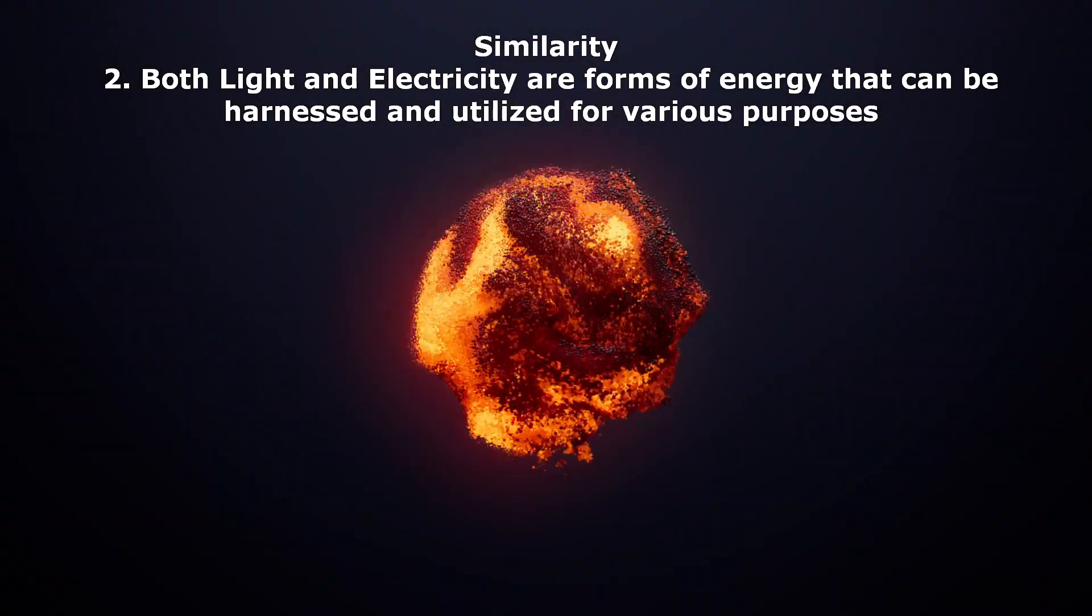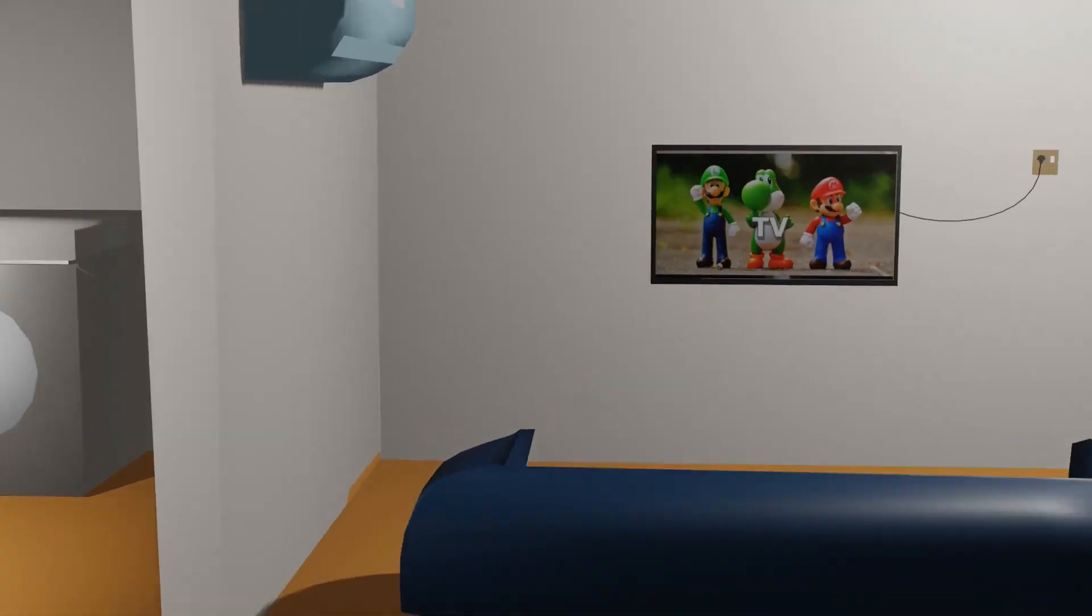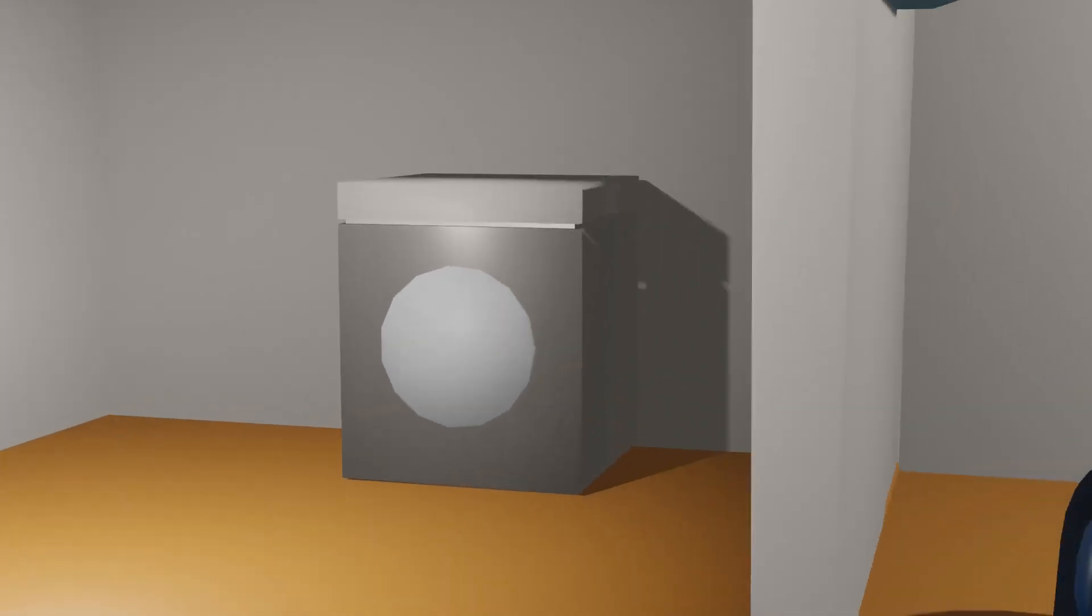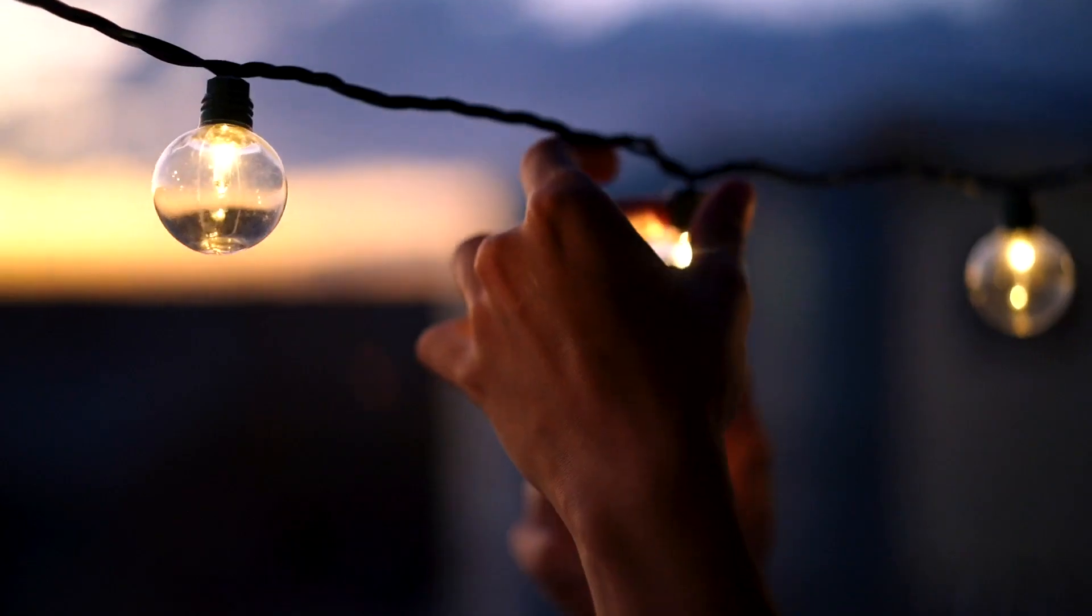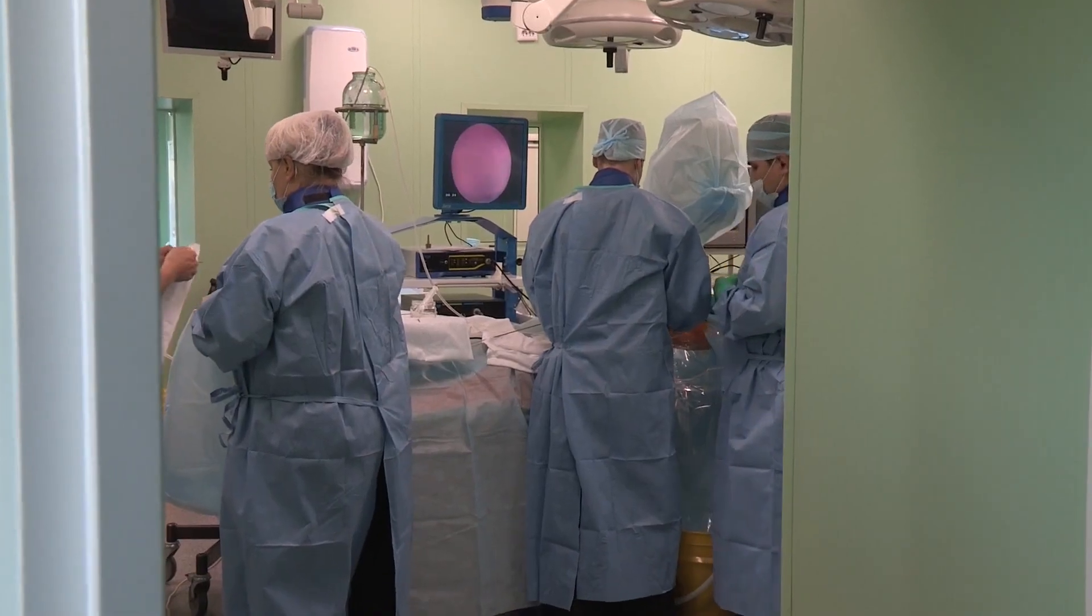Secondly, both light and electricity are forms of energy that can be harnessed and utilized for various purposes. For example, electricity powers our homes and enables us to use electronic devices, while light is used for lighting, communication, and in some cases, even for medical purposes.